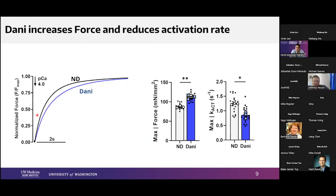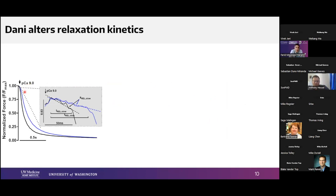Here is an example of a pig myofibril tracing with no drug versus Danicamptiv, normalized to highlight kinetic changes. Max force was slightly increased. These are paired samples with technical replicates as smaller dots and three biological replicates per group. You can see max force is increased and the rate of activation is slightly decreased. Looking at the slow phase — the Danicamptiv tracing in blue versus control in black — there is a clear difference in both the duration of the slow phase and the rate.